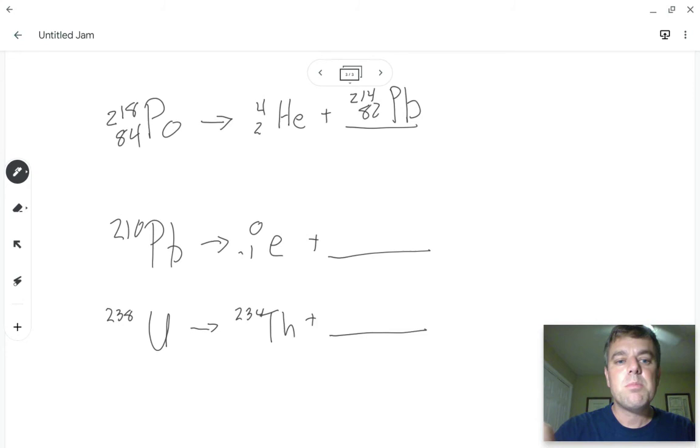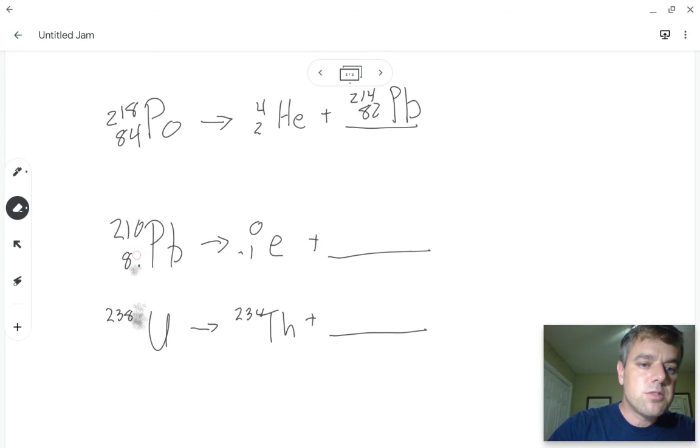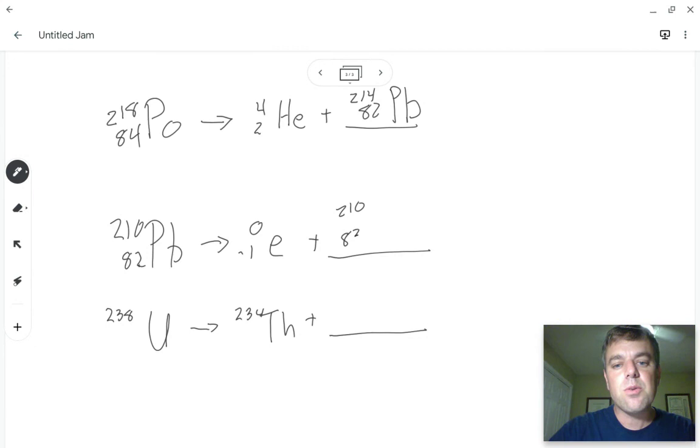Then we have another one. Here we've got 210 lead. We just saw that lead's atomic number is 82, so we'll go on and write that in, we're going to write that in for us, 82. And then if we start with a mass of 210, we don't lose any mass, we're going to end up with a mass of 210. And if we started with 82 protons and a neutron turned into another proton, that's going to give us 83 protons. And the element with 83 protons is bismuth with the symbol B-I.